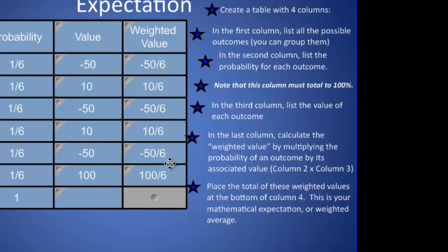So if I add up all of these values, I have three negative 50s, so a negative 150, and a positive 100, a positive 10, and a positive 10. So that's a positive 120, with the negative 150 gives me negative 30 over 6, or negative 5.